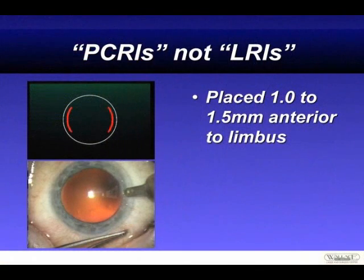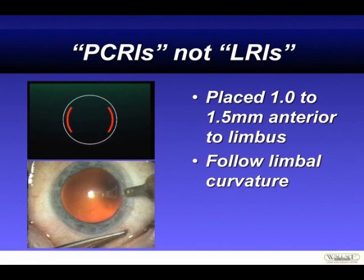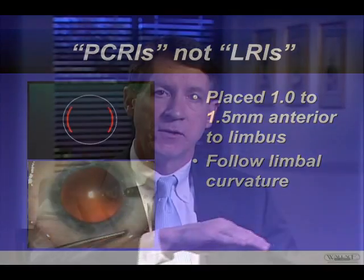Limbal relaxing incisions have really been misnamed — they're not really at the limbus. If they are at the limbus, they're not going to correct the cylinder we need to correct. They're usually placed one to one and a half millimeters anterior to the surgical limbus. We like to follow the limbal curvature; that's one of the real advantages of this procedure. The nice curvature of these incisions is why they're able to give us predictable results.